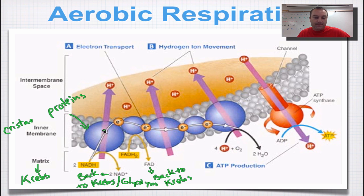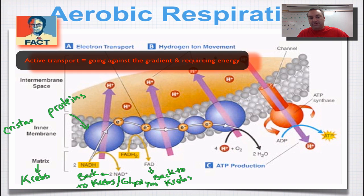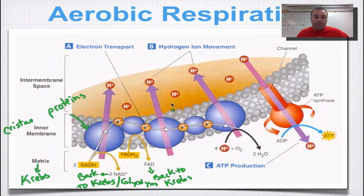Every time an electron goes from one protein to another, hydrogens are pumped across. This would be active transport because we've got lots of hydrogens over here and not as many on the other side, so we keep pumping them across. The energy is supplied by these electrons.